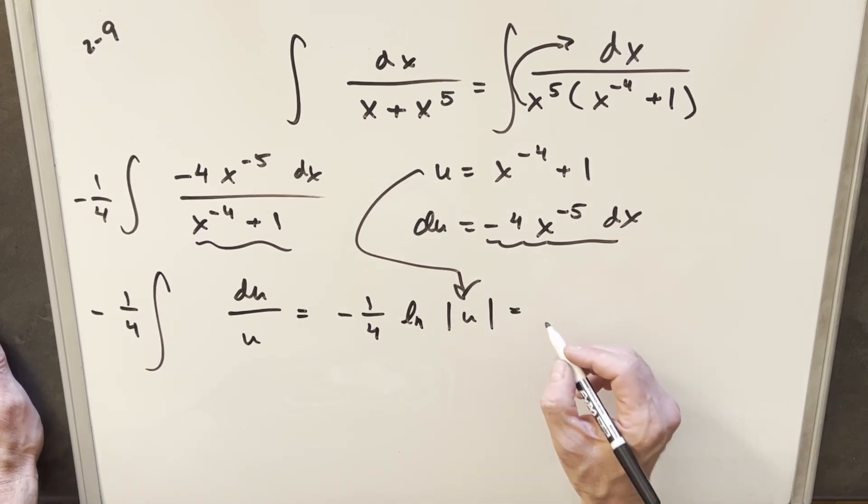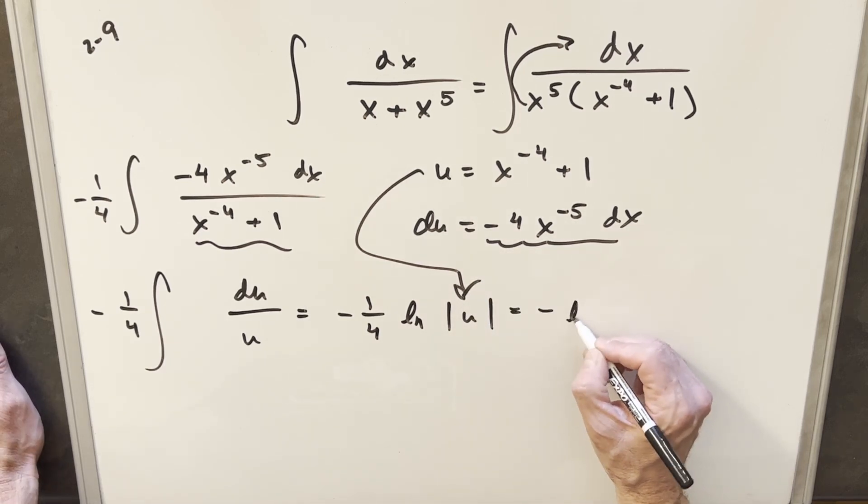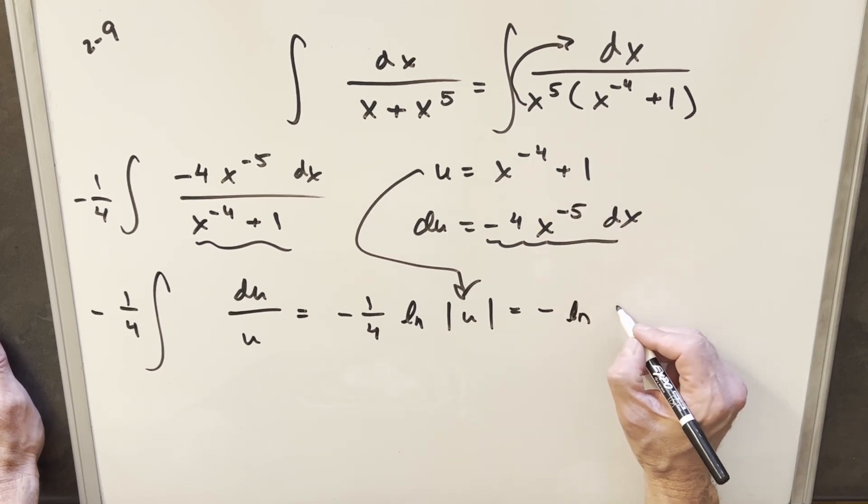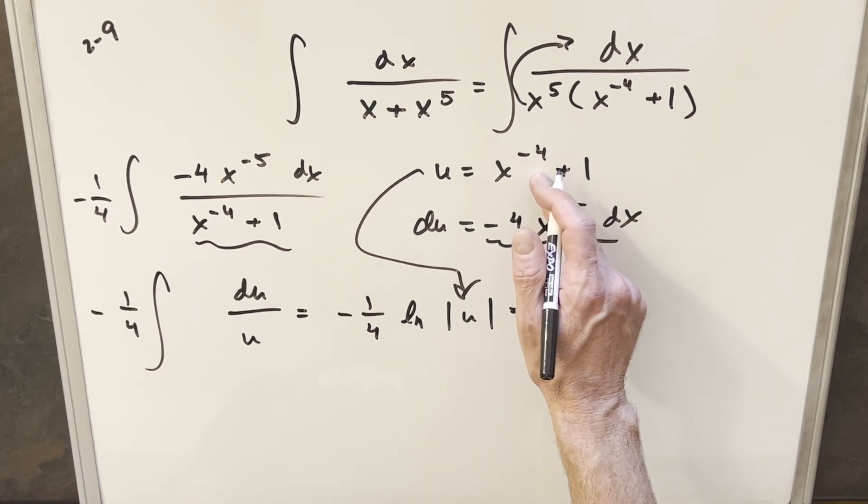So doing this, I'm going to write it as minus natural log, bringing this in for u. Now, actually, because we have an even power here, this is never going to be negative.